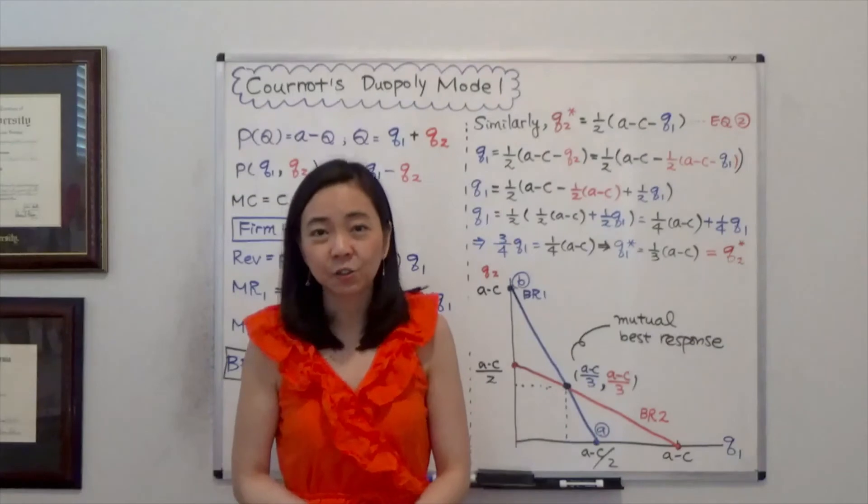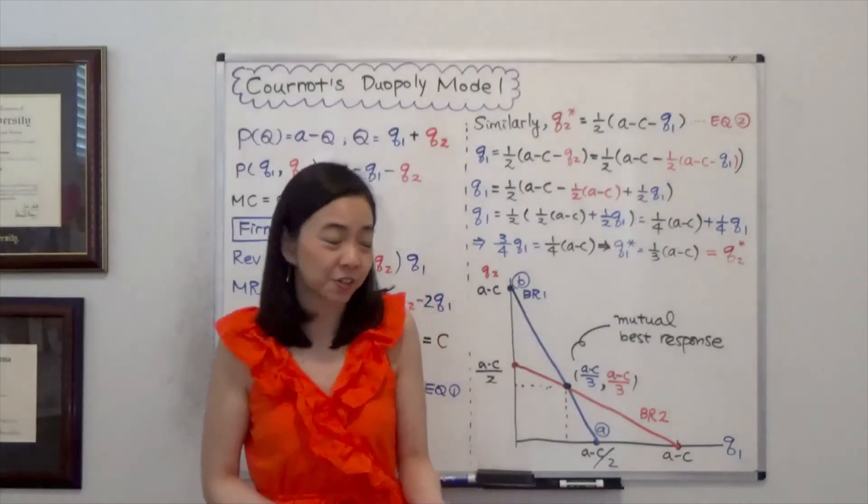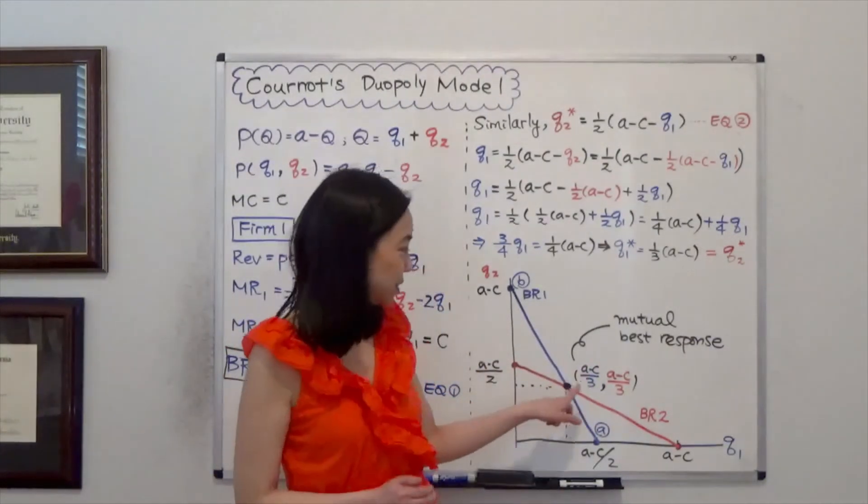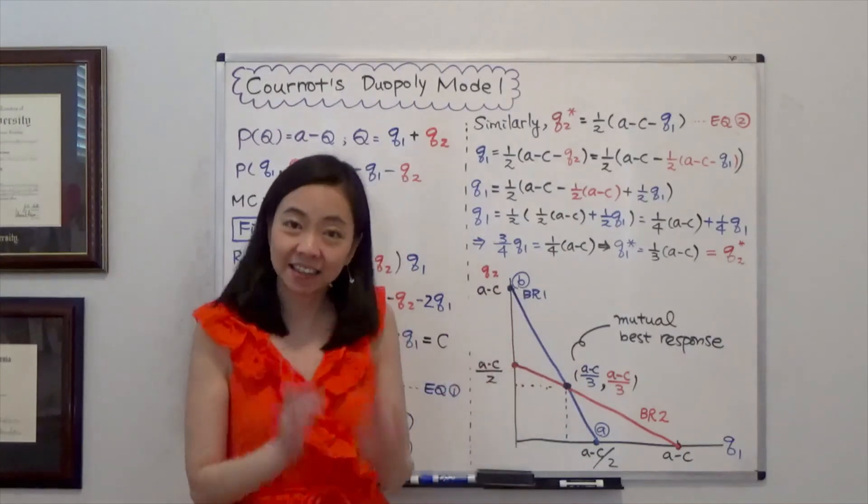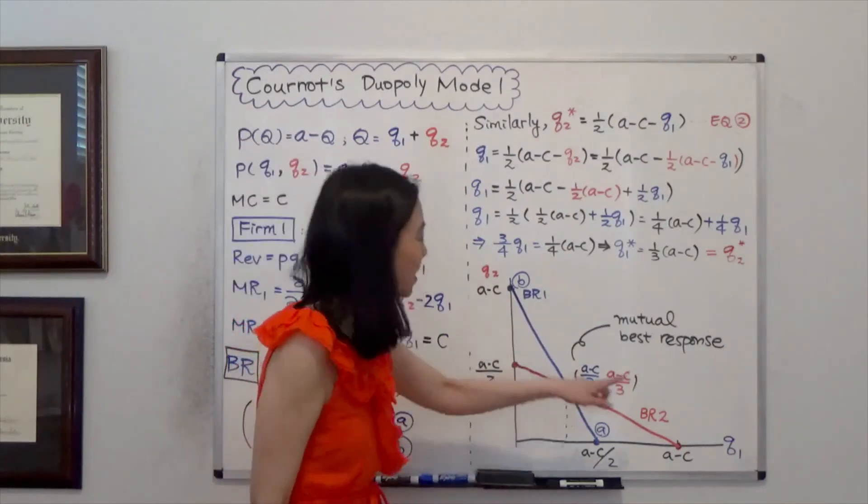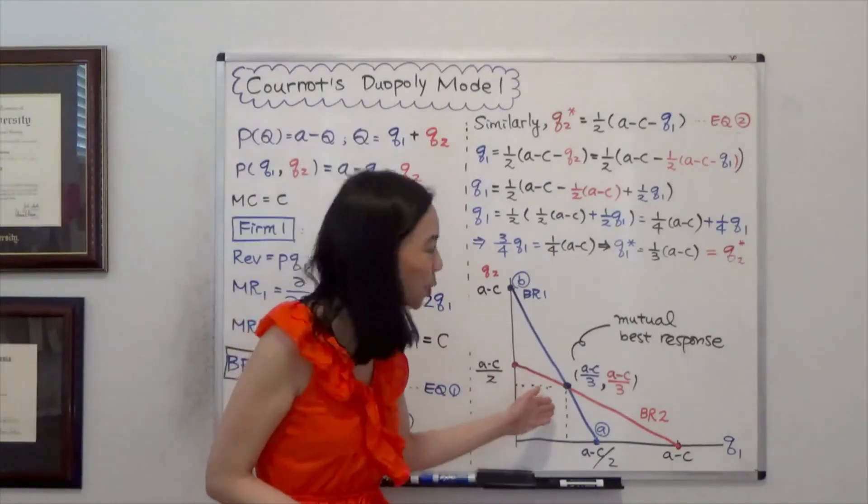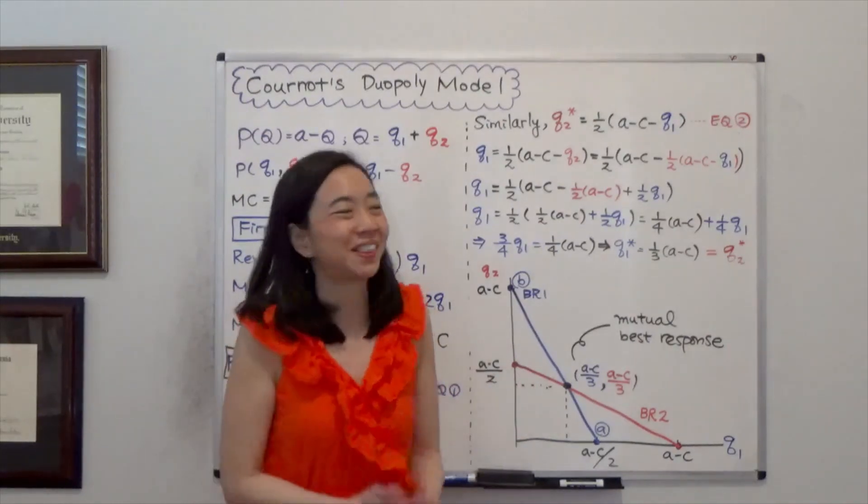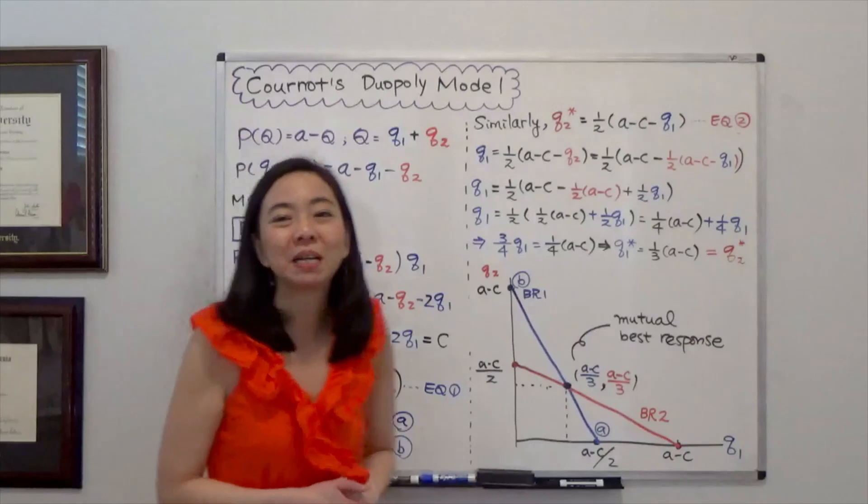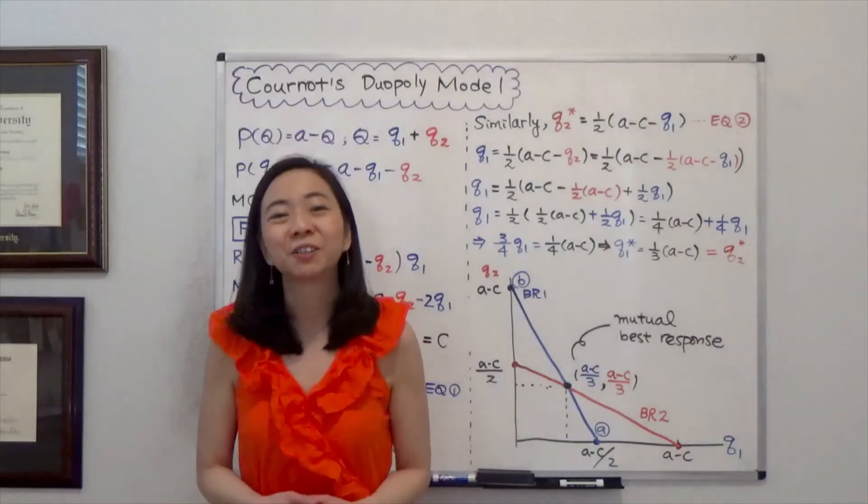Graphically you can see the solution of Q1 star and Q2 star. They are both A minus C over 3. And that's at the intersection of BR1 and BR2. In game theory we say that this is mutual best response. So this is the Cournot's duopoly model. I hope this helps. I'll see you next time.